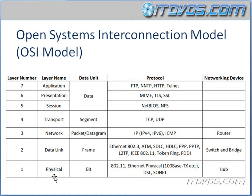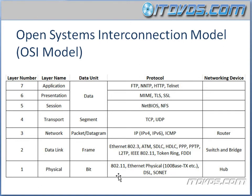Finally, we have layer 1, which is our physical layer. This is the actual media that our bits are transferred across — something like an Ethernet cable. The protocols include 802.11, Ethernet physical (your actual Ethernet cable), 100BaseTX — we're going to talk about that in a second — DSL, and Sonnet. Hubs work at layer 1, our physical layer.